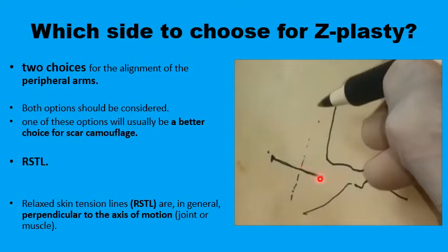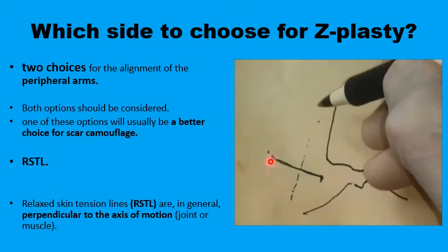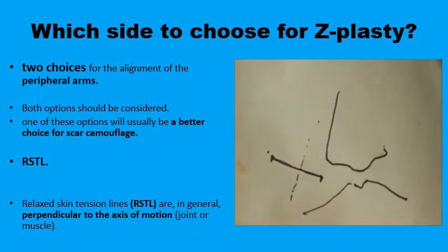With every scar that forms the central part of the Z, you have two choices. The Z can start from one point going in one direction with the scar in the middle and the other limb parallel to the first, or it can go the other way around. Obviously, you don't want the choice that results in incisions not in good relation to the relaxed skin tension lines — you prefer the other form of the Z. The main point is that with every scar you have two options and must plan which is best.